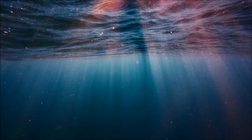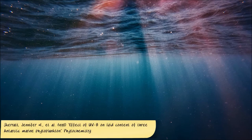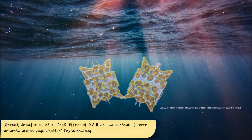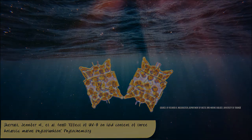We know, for example, that UVB influences the fatty acid, lipid, and sterol composition in marine phytoplankton species of the Antarctic. As phytoplankton forms the basis of the marine food web, these changes can ultimately also alter the overall nutritional quality of food available for higher trophic levels. If you want to know more about trophic levels and the food web, stay tuned as we will talk about it in our next video.